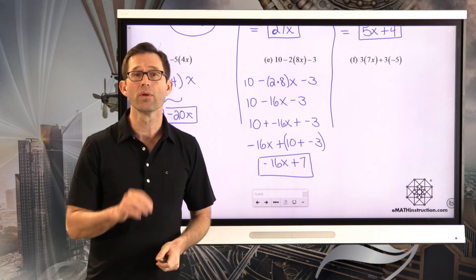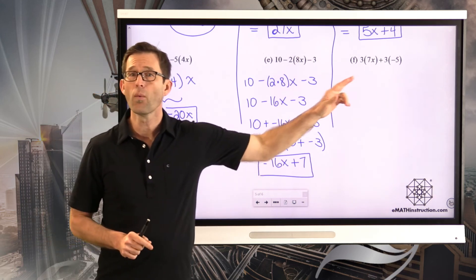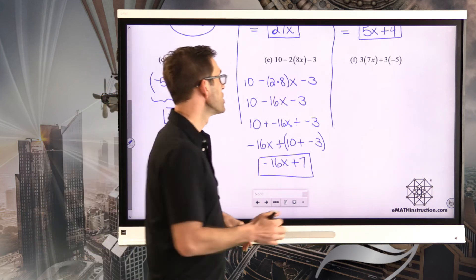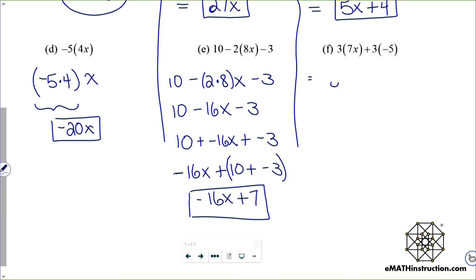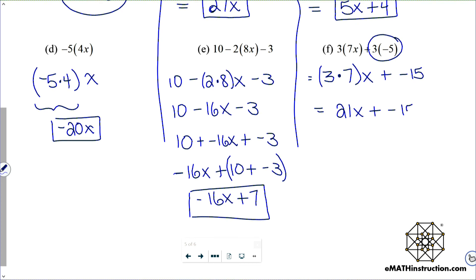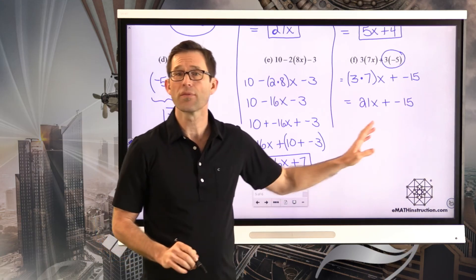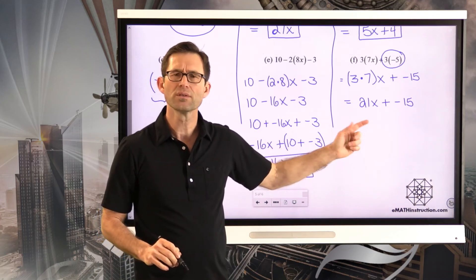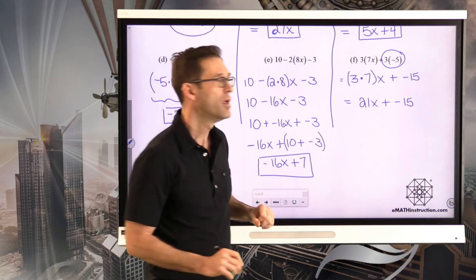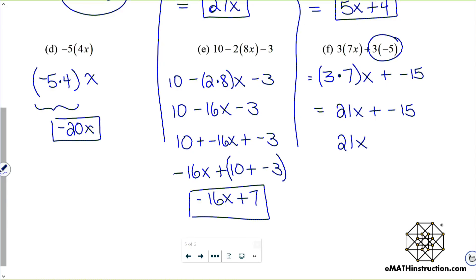We want to emphasize the use of real number properties here. The final expression, letter F, is a couple of these ideas put together. We could look at it as 3 times 7 times x plus negative 15. Then 3 times 7 is 21, giving 21x plus negative 15. Most of the time we won't leave our answer as plus a negative, so we rewrite it as 21x minus 15.